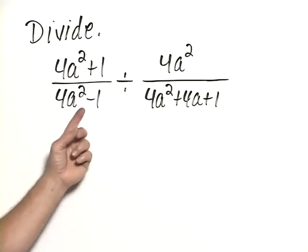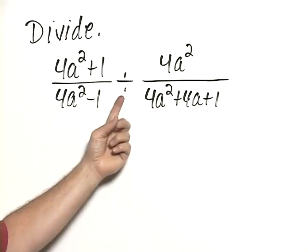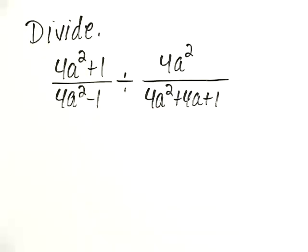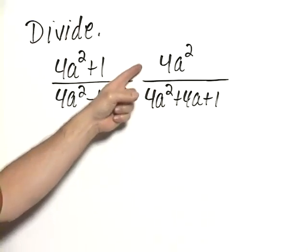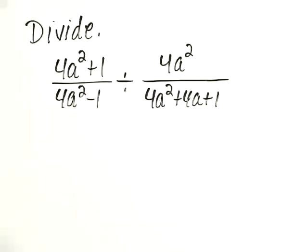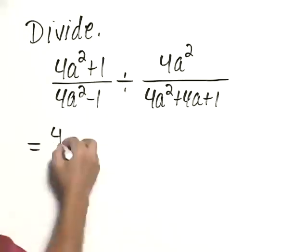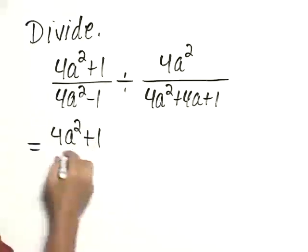When dividing two rational expressions, we change the operation to multiplication and we take the reciprocal of the second rational expression or the one that comes after the division symbol. So this would be equal to 4a squared plus 1